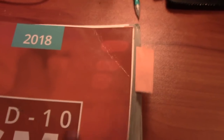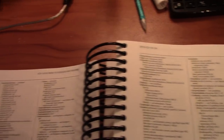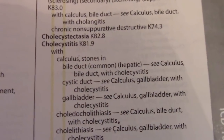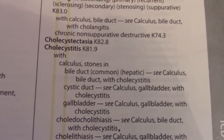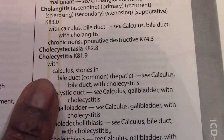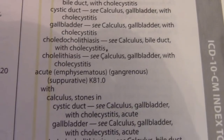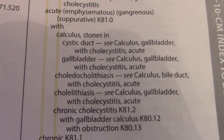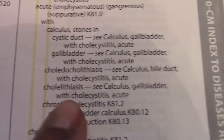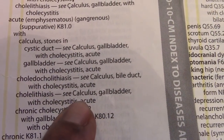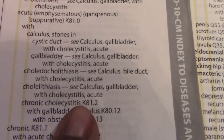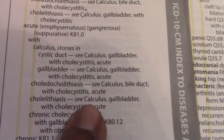For question one — acute cholecystitis with cholelithiasis — I'm going to look up cholecystitis in my 2018 ICD-10-CM code book. A trick of the trade: look up every single word in the diagnosis until you find the code that encompasses everything. Under cholecystitis it says 'see calculus' — and notice 'calculus' has a capital C — gallbladder with cholecystitis, acute. So I need to go to main term calculus.